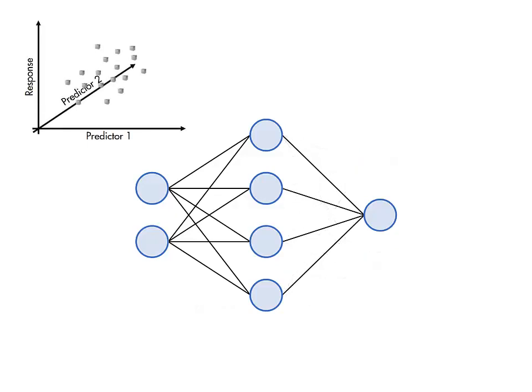For regression problems, the goal is to predict a continuous response value based on the values of n predictor variables. An appropriate feed forward network for this has n input neurons and a single output neuron. Each input neuron takes the value of a predictor variable. The value of the output neuron is the network's predicted value of the response.